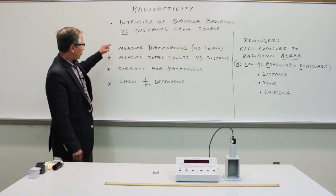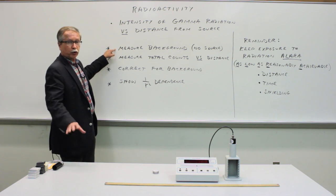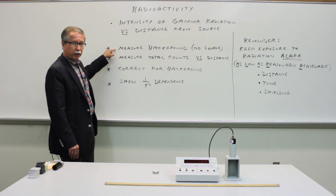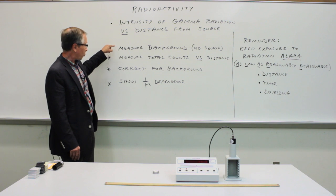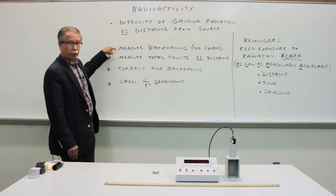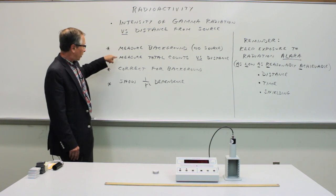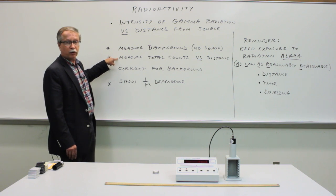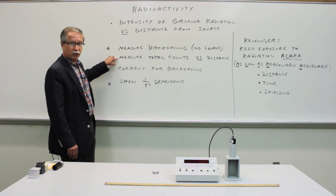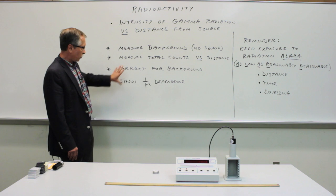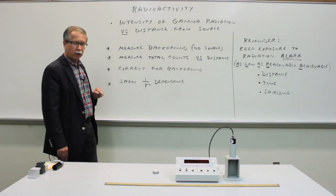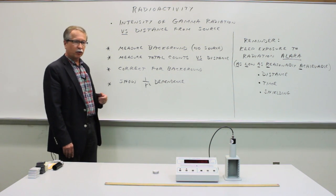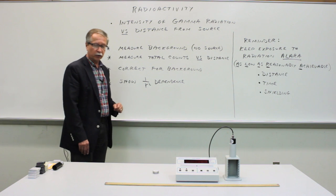We'll measure the background radiation — with no source present, just measure the naturally occurring radiation — and correct all of your data for the presence of background. Then measure the number of counts as a function of distance from the source and do some appropriate plot and analysis to demonstrate the inverse square dependence.